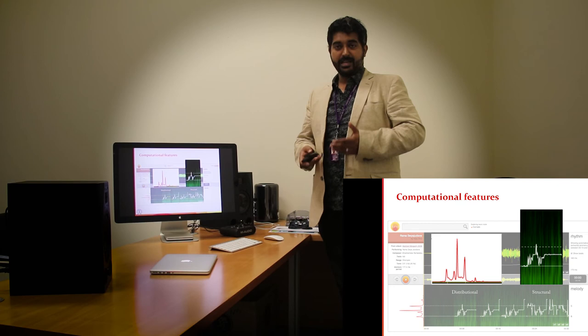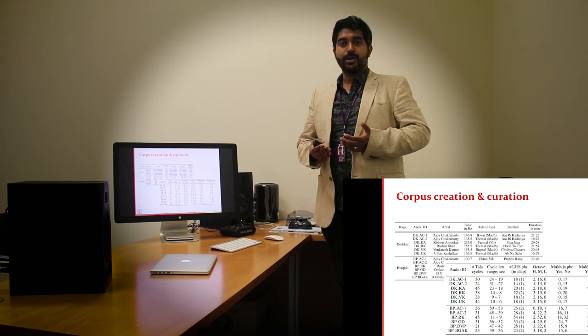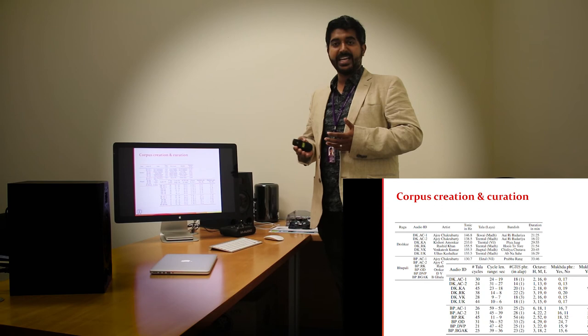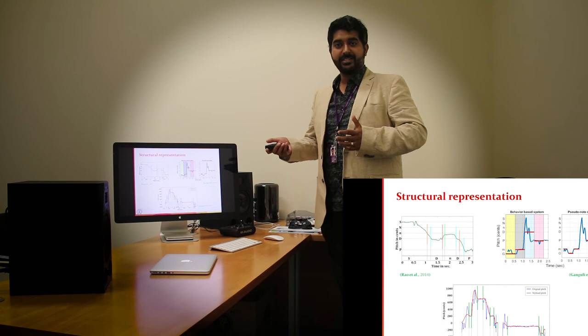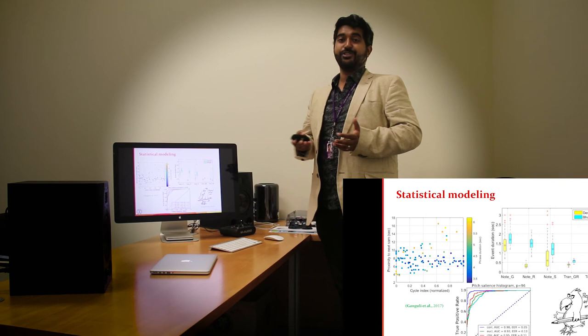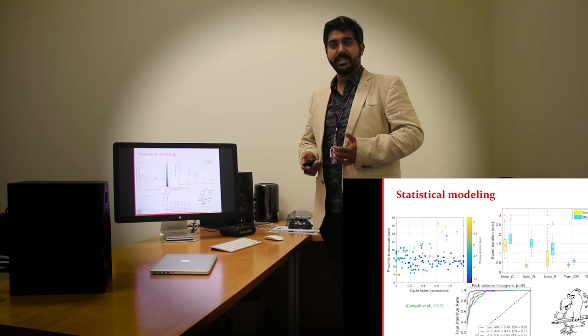We do a bunch of feature extractions. But before that, as it's a machine learning model, we have to have a good amount of data. So we create and curate a corpus by eminent Hindustani vocalists and then extract a bunch of distributional representations and structural representations. All the papers are cited so you can refer to the detailed methods. And then statistical modeling and not only that, some perceptual experiments because we want our model to be coherent to human perception and cognition.